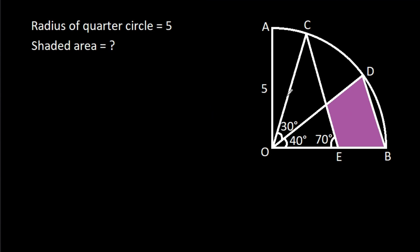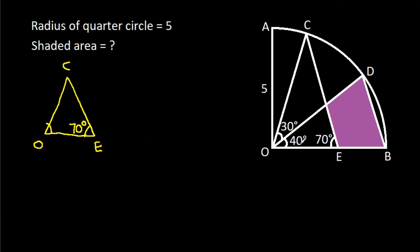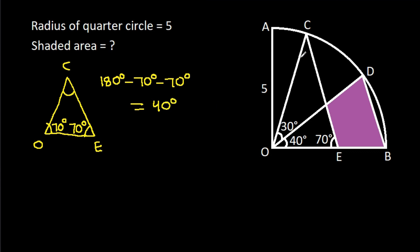In triangle COE, this angle is 70 degrees, and this angle is 40 minus 30, that will be 70 degrees. So this angle will be 180 degrees minus 70 degrees minus 70 degrees, that will be 40 degrees. This angle is 40 degrees.